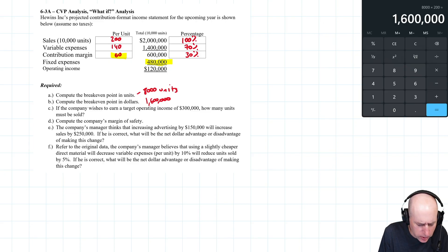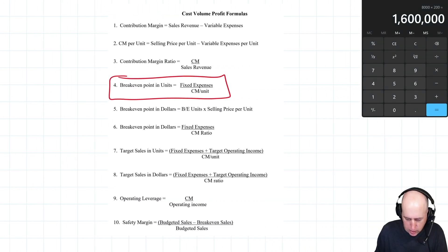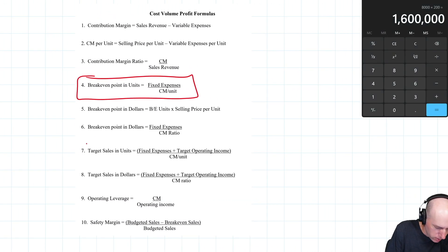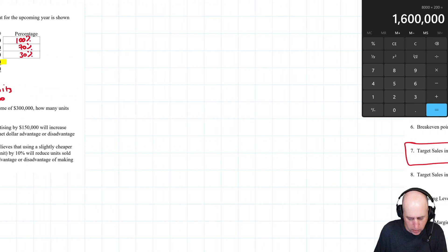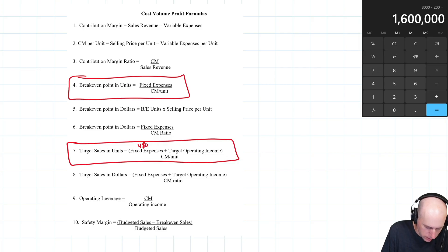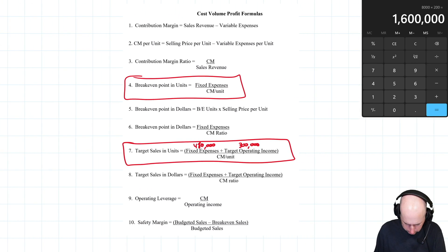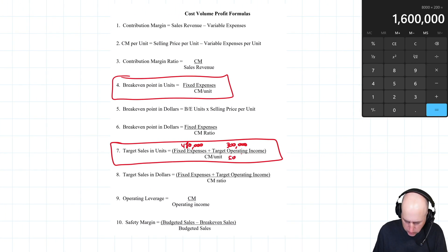If the company wishes to earn a target operating income of $300,000, how many units must be sold? We're going to use this formula. Our fixed expenses were 480 plus target income, our target income was 300, divided by CM per unit. CM per unit was 60. So 480,000 plus 300,000, 780,000 divided by 60, 13,000 units.